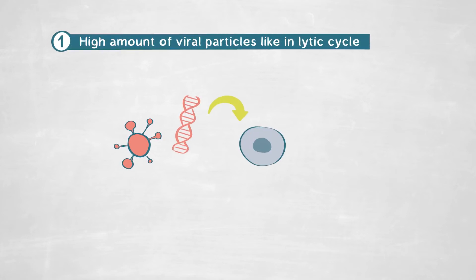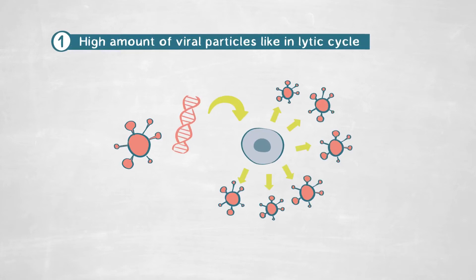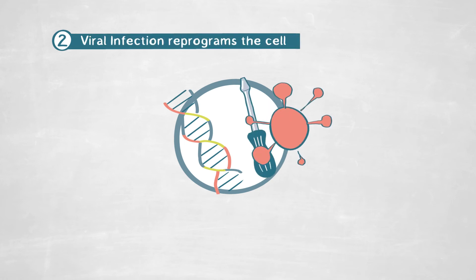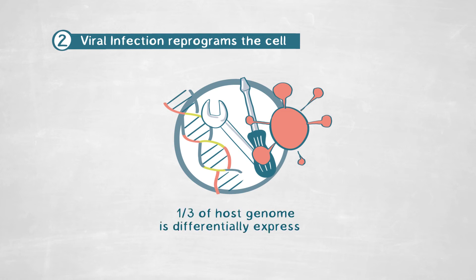What we found is that this viral infection we were characterizing was nothing like any other chronic infection reported to date. First, the virus produced an incredibly high amount of viral particles — comparable to a lytic infection, but without actually killing the host. When we looked at the metabolism of the cell, we discovered that the viral infection completely reprograms the transcriptional program of the cell, meaning that more than one-third of the host genome is differentially expressed under viral infection.